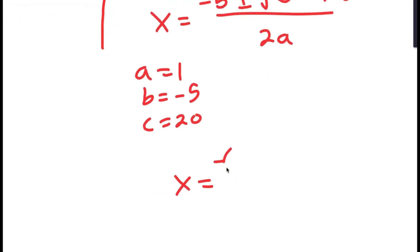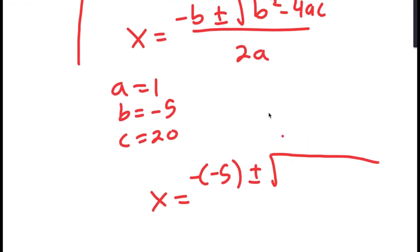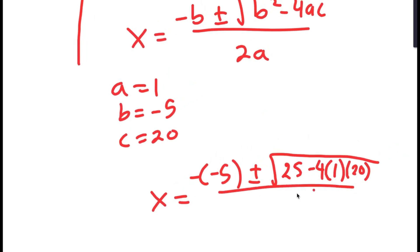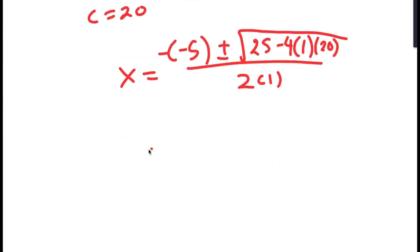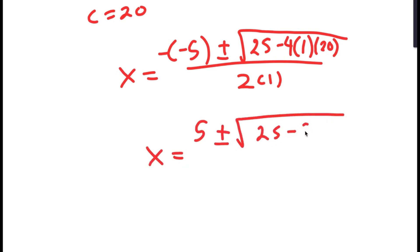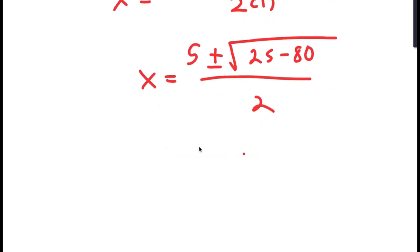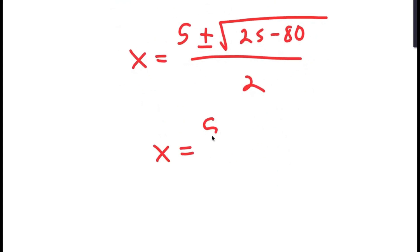So I get x equals negative of negative 5, plus or minus the square root of negative 5 squared, which is 25, minus 4 times 1 times 20, all over 2 times 1. This equals 5 plus or minus the square root of 25 minus 80 over 2, which is 5 plus or minus the square root of negative 55 over 2.